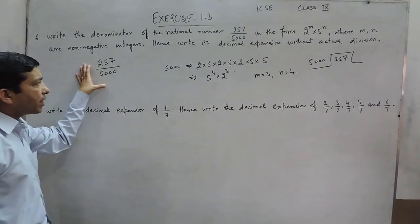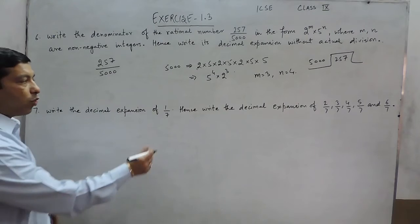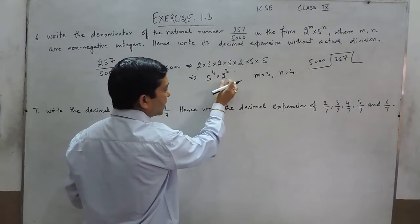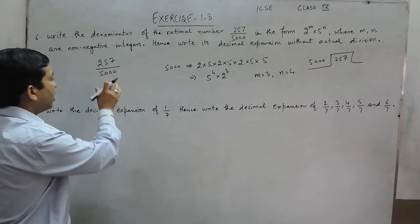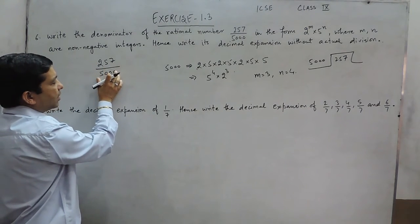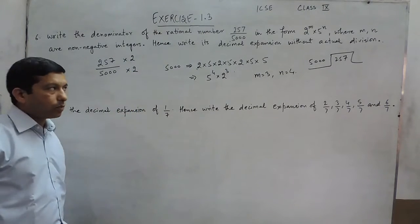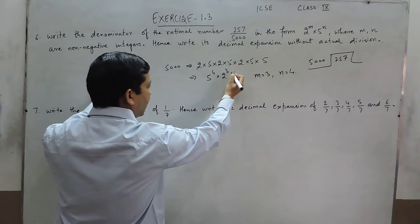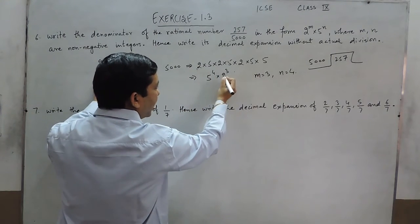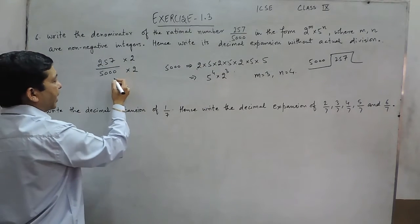But when we have to solve this kind of fraction without actual division, we need that the power of 5 and 2 must be both equal. So if I multiply this in the numerator as well as in the denominator by 2. Already 5000 is 5 to the power 4 into 2 to the power 3. If I multiply it by 2, then here it becomes 2 to the power 4.